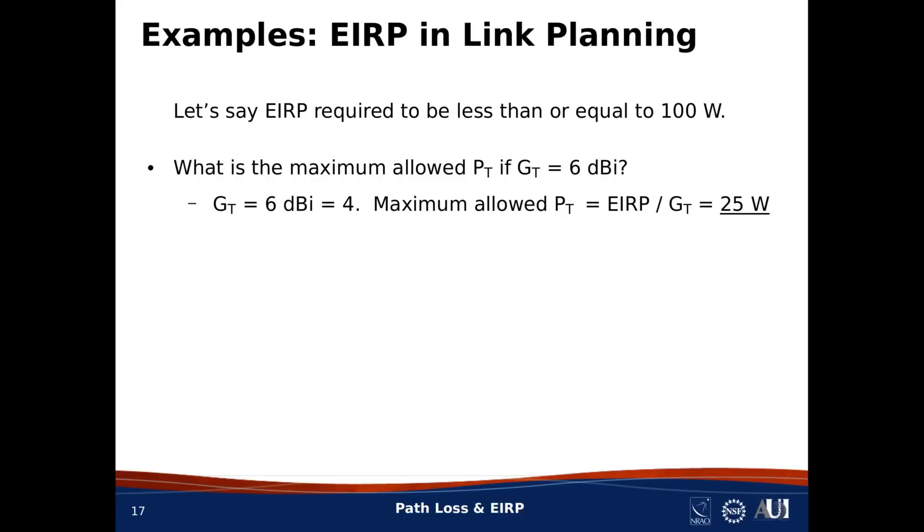Then let's say the transmit gain of our antenna is 6 dBi. Now, given those two numbers, how much power are we allowed to apply to our antenna? Well, the answer is 25 watts. The calculation is shown here. 6 dBi is about 4 in linear units, so the maximum allowed power is EIRP divided by 4, which is 25 watts.